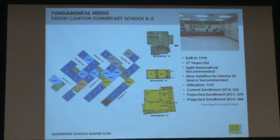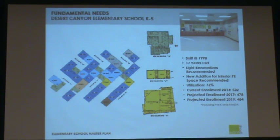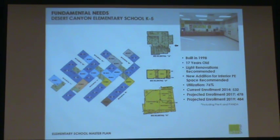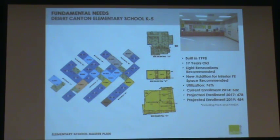Desert Canyon was built in 1998 — 17 years old with light renovations recommended. The picture on the right shows their existing PE space, which was an old art room, so we recommended a new addition for interior PE space. Utilization is 76%. Current enrollment for November 2014 was 532. Projected enrollment for 2017 was 478, and for 2019, 484.